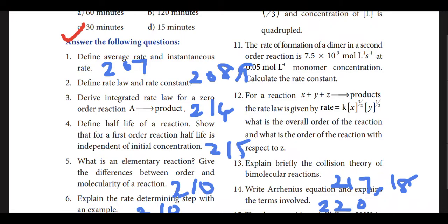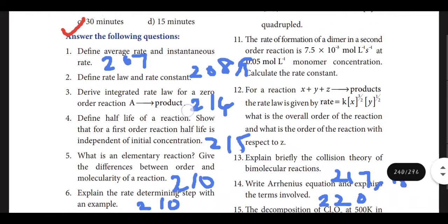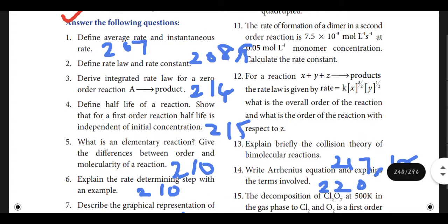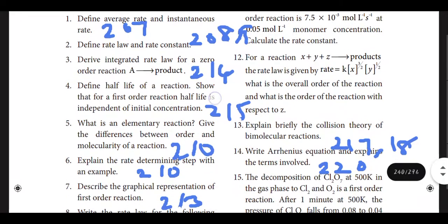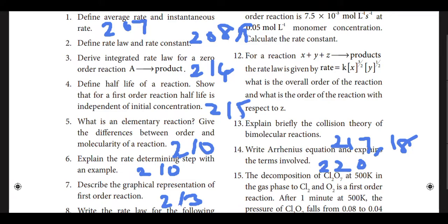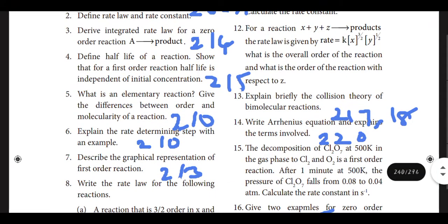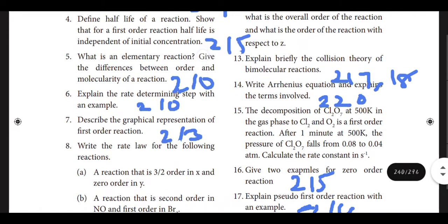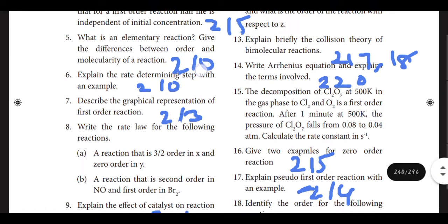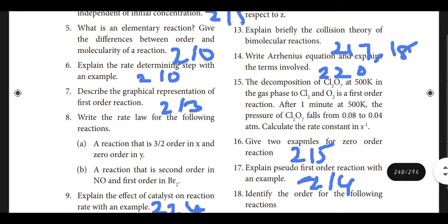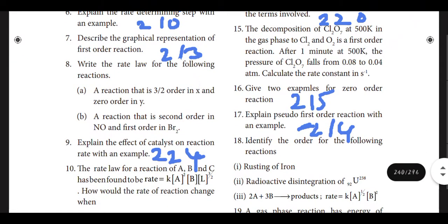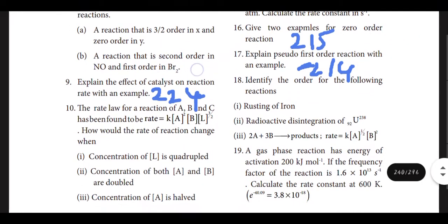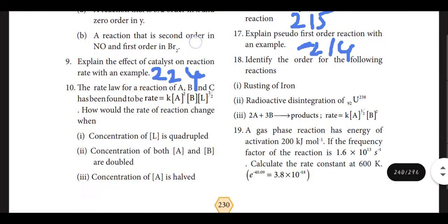First, let me mark the page numbers for each question. Answer the following questions: first one is page number 207, second one pages 208 and 209, third one page 214, fourth one page 215, fifth one page 210, sixth one page 210, seventh one page 213, eighth one refer the material, ninth one page 224, tenth one also refer the material.